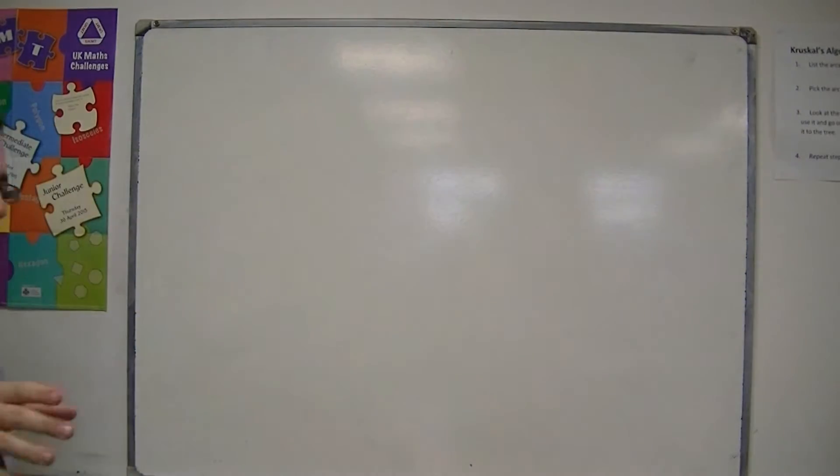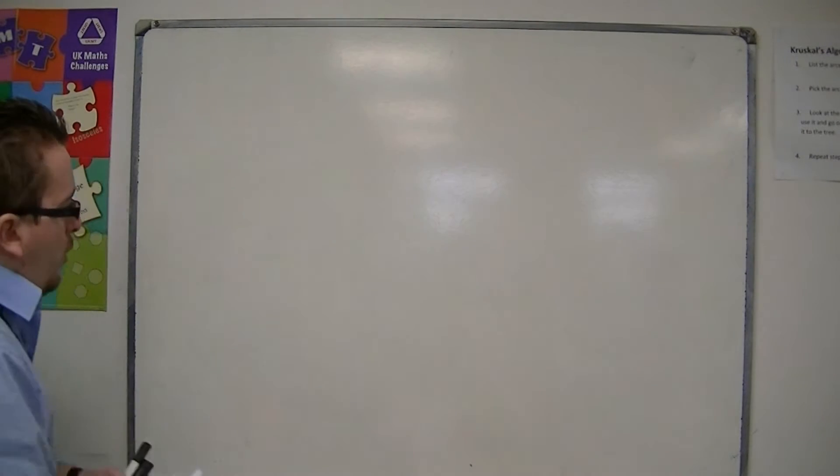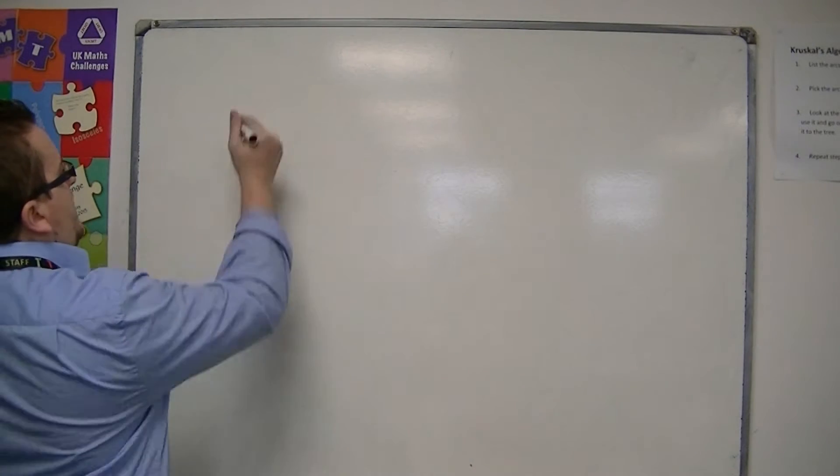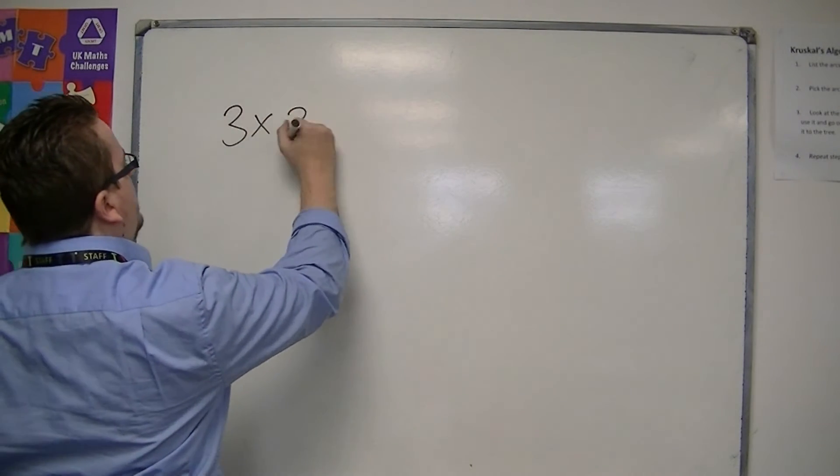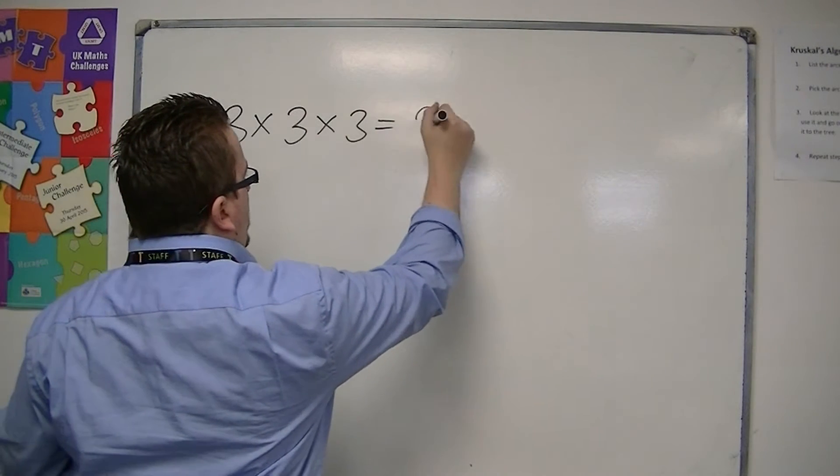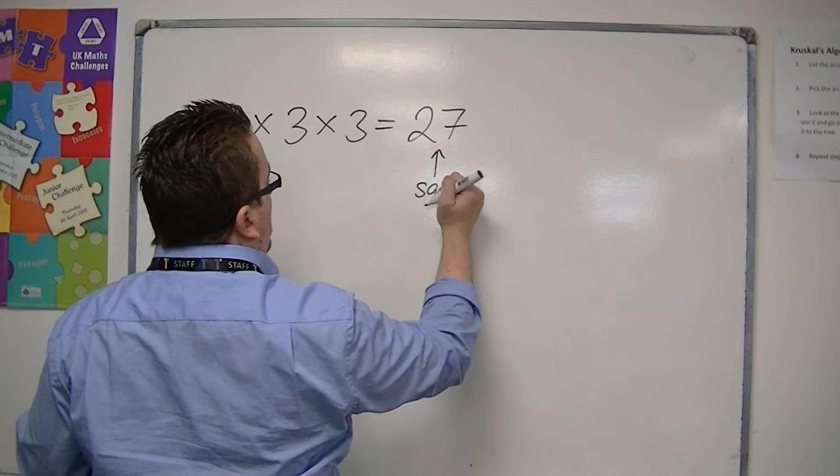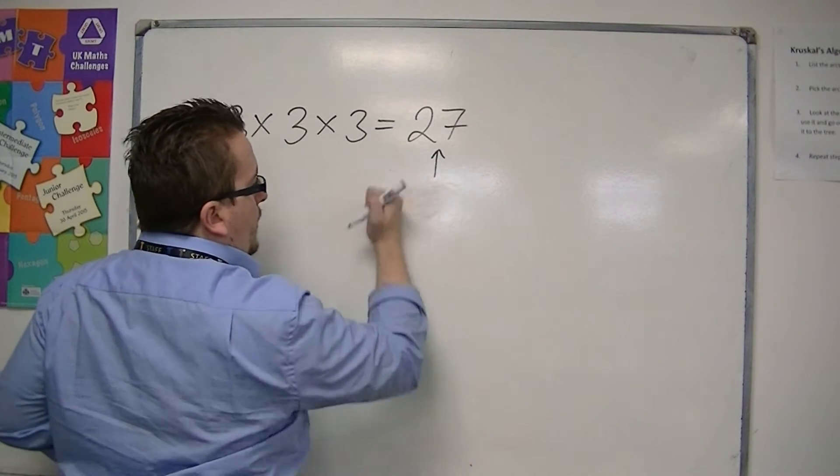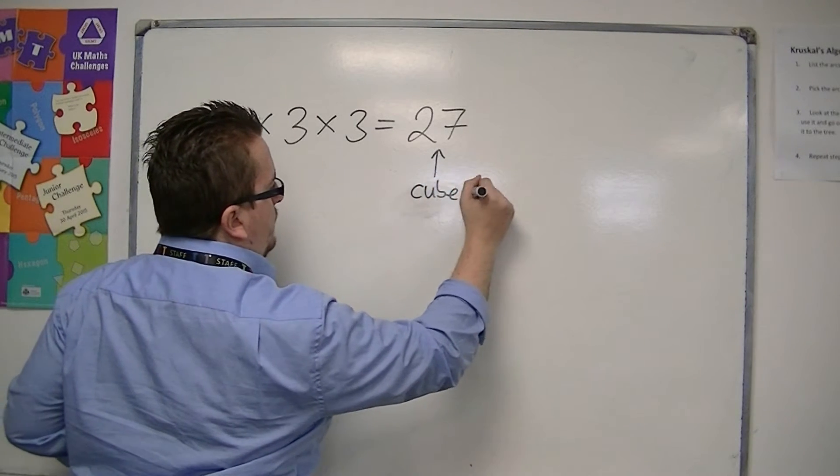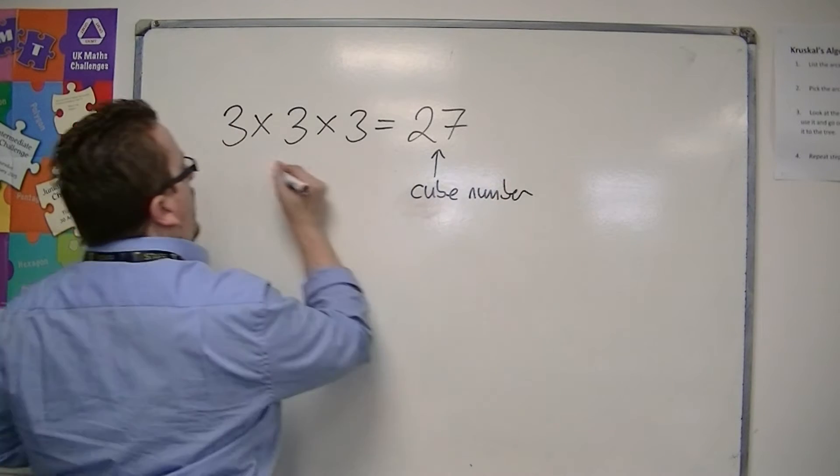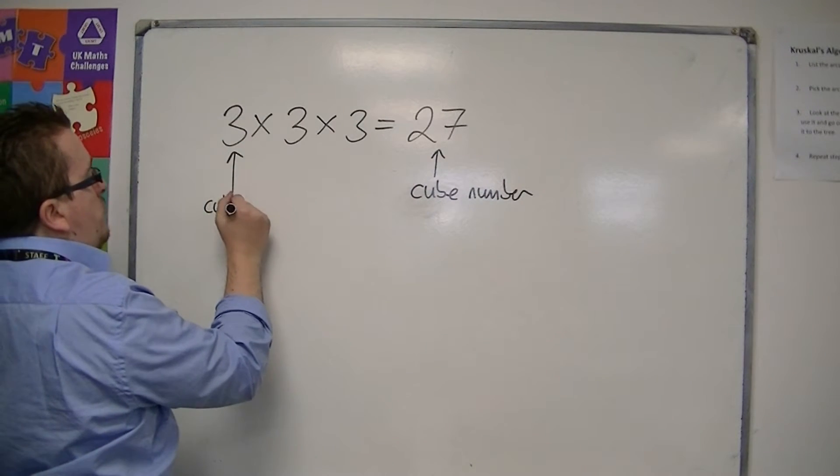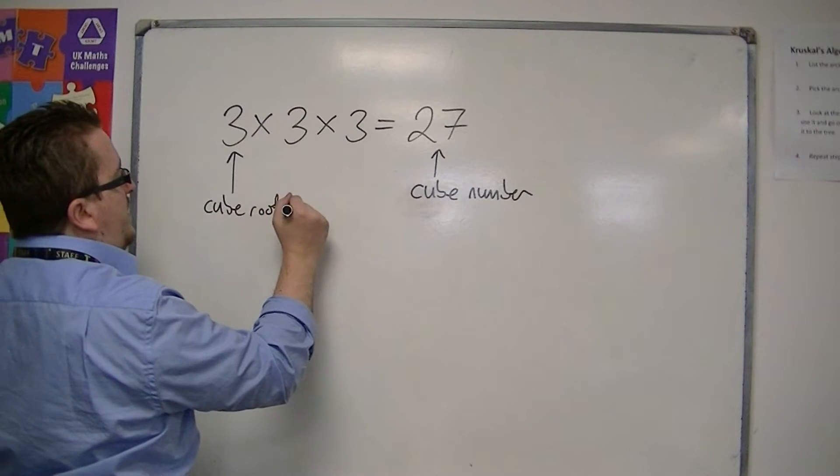So in the cube numbers video, we looked at 3 times 3 times 3, which is 27. 27 is the cube number, while the 3 is the cube root of 27.